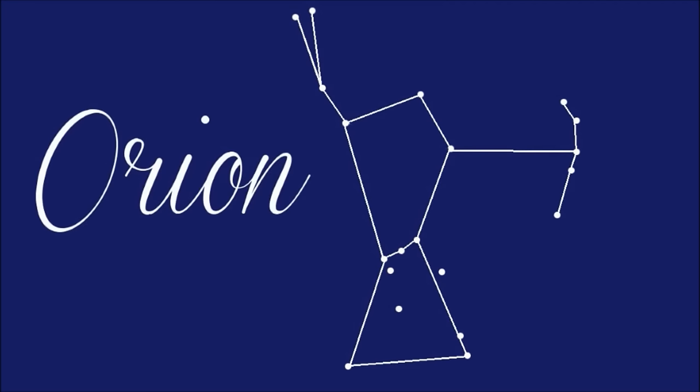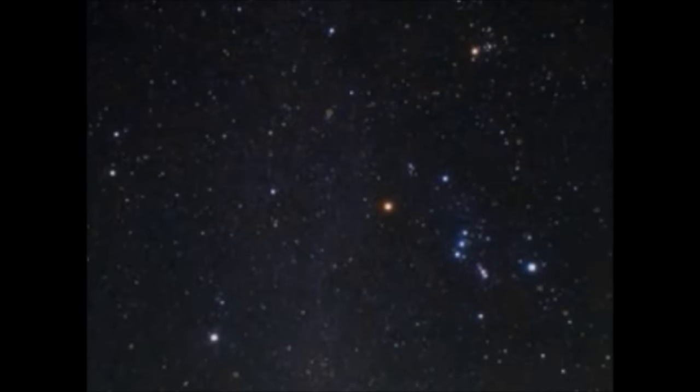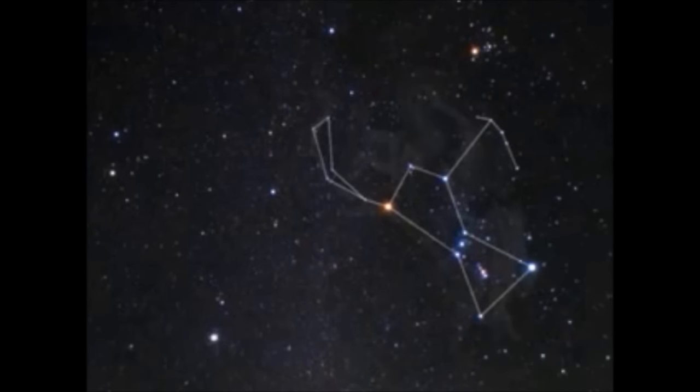It's Orion! Most visible from January to March, Orion is one of the easiest constellations to find in the sky.